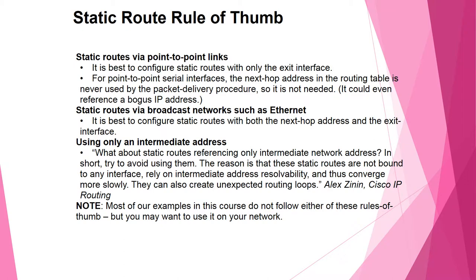For a static route through a point-to-point link, it is best to configure the static route with only the exit interface. For point-to-point serial interfaces, the next-hop address in the routing table is never used by the packet delivery procedure, so it is not needed. It could even reference a bogus IP address.